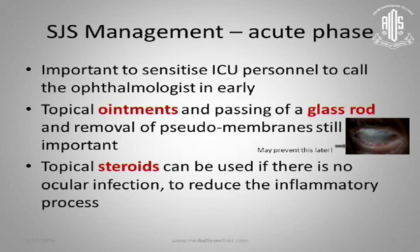It is most important to sensitize ICU personnel to call the ophthalmologist in early. The traditional treatments of topical ointments, passing of a glass rod, and removing pseudomembranes are still important and can be done in the ICU itself. If there is no infection, start topical steroids to reduce the inflammatory process, but observe the patient for signs of infection.